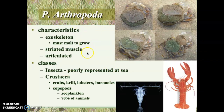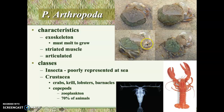The next phylum is the arthropods. On land you're more familiar with insects and spiders, but the arthropods in the oceans are the crustaceans — the crabs, krill, lobsters, and barnacles are all arthropods. Because they have a solid exoskeleton, they have to shed it in order to grow. You can see a crab in the upper right-hand corner shedding its exoskeleton and crawling out of it.